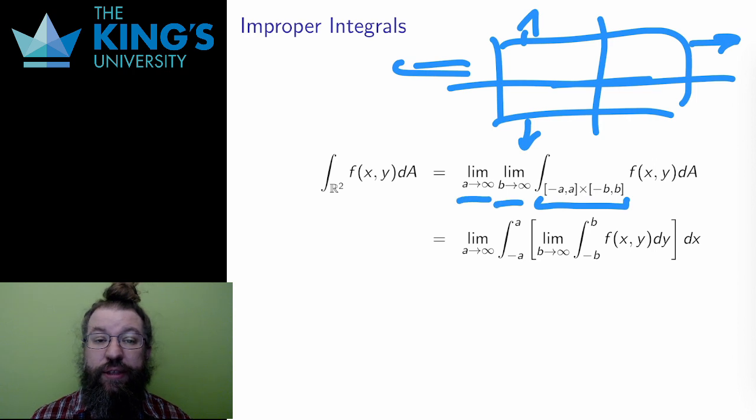If both limits exist, then the improper integral converges, and the volume under this graph, even over the whole plane, is finite.